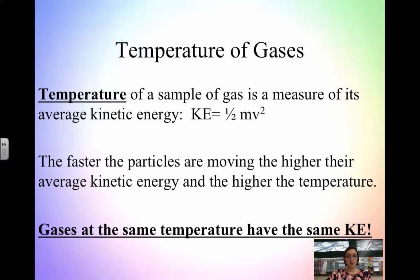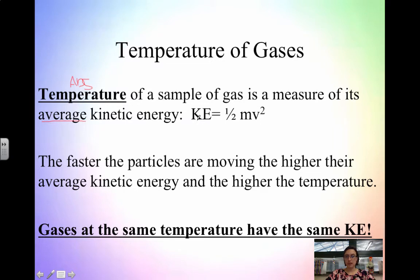Just to review, we're going to look at temperature of gases again. Remember that the absolute temperature of a sample of gas is a measure of its average kinetic energy. This temperature needs to be absolute, which means it's Kelvin. Remember kinetic energy is measured in joules, mass has to be in kilograms, and velocity is in meters per second. So temperature is just a measure of the average kinetic energy.